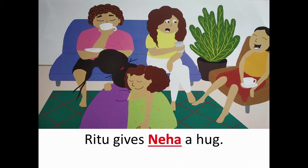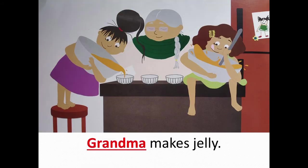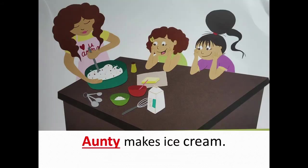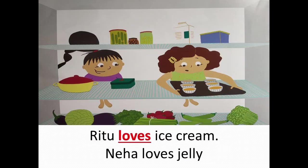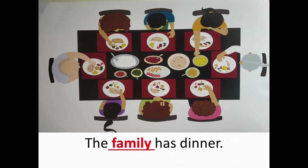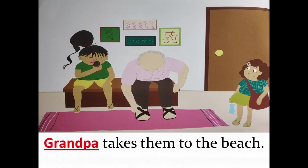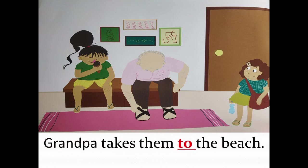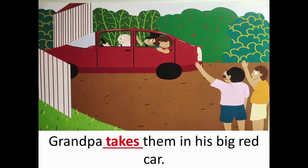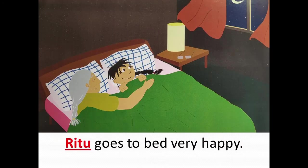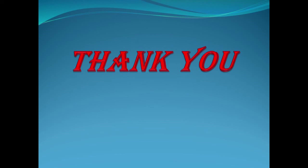Ritu and Her Family. It is Sunday. Uncle Ram has come to visit. Ritu gives Neha a hug. Grandma makes jelly. Auntie makes ice cream — yum yum yum! Ritu loves ice cream. Neha loves jelly. The family has dinner. Grandpa takes them to the beach. Grandpa takes them in his big red car. Ritu goes to bed very happily.